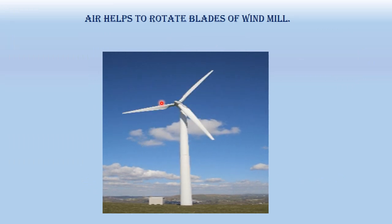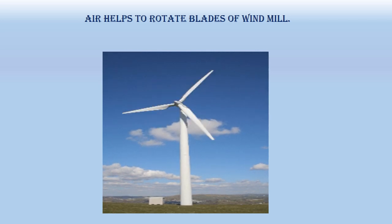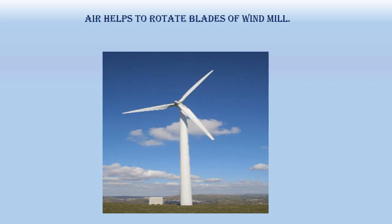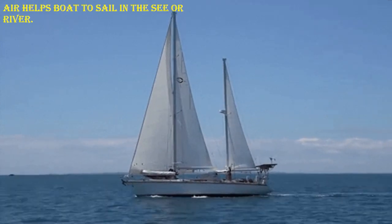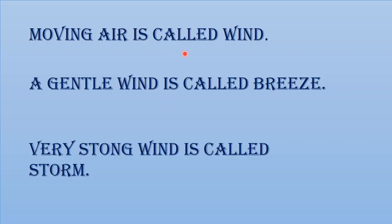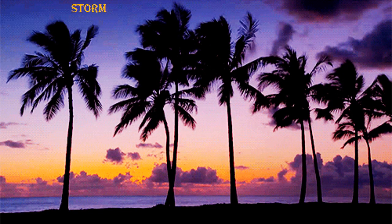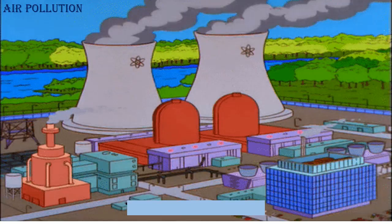Air helps to rotate the blades of a windmill — there are three blades. Air also helps boats to sail in the sea or river. Moving air is called wind. A gentle wind is called a breeze. A very strong wind is called a storm.